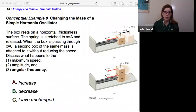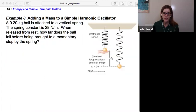Let's look at a more quantitative example. So example eight, adding a mass to a simple harmonic oscillator. A 0.20 kilogram ball is attached to a vertical spring. The spring constant is 28 newtons per meter. When released from rest, how far does the ball fall before being brought to a momentary stop by the spring?